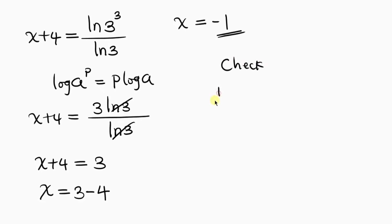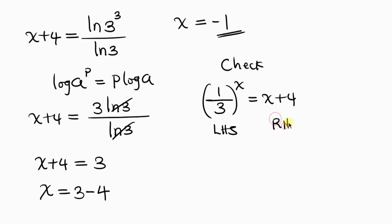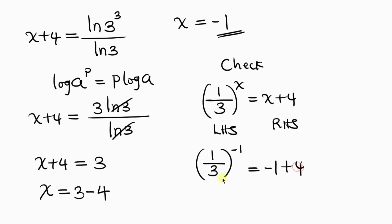Let's check our answer. Our given equation is 1 over 3 all raised to the x equals x plus 4. Substituting x equals negative 1: on the left we have 1 over 3 raised to negative 1, and a negative exponent means the inverse, so the inverse of 1 over 3 is 3. On the right, negative 1 plus 4 equals 3. The left-hand side equals the right-hand side, so x equals negative 1 is correct.